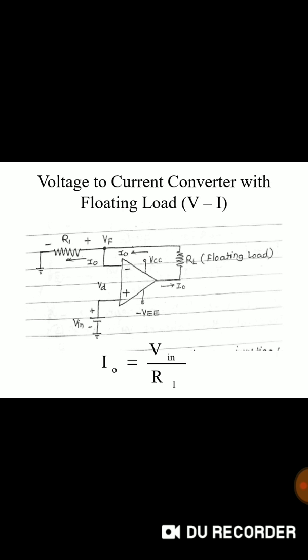Applying KVL to the input loop we can say that VIN is equal to VD plus VF. But as open loop gain of this op amp is very large VD is almost equal to 0 and therefore VIN is equal to VF. VIN is equal to R1 into output current I O and therefore I O is equal to VIN upon R1. So voltage to current converter.